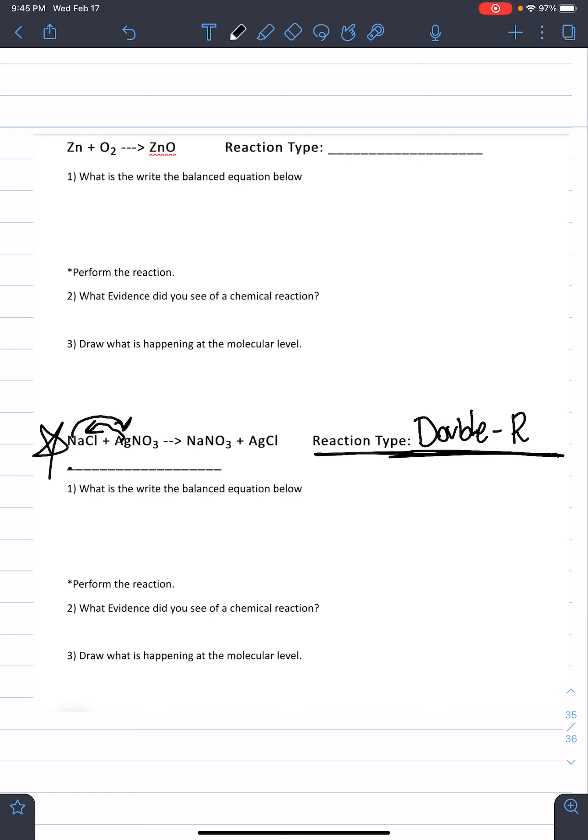So, then the next thing asks us to write a balanced equation. So, if you look at this one, you'll actually notice that this equation looks balanced already. We have 1 Na, 1 Na, 1 Cl, 1 Cl, 1 Ag, 1 Ag, 1 NO3, 1 NO3. So, you can either rewrite the whole equation, the NaCl plus AgNO3, you can write the whole thing. Or you can write, like, already balanced if you want. Just to save you some time.